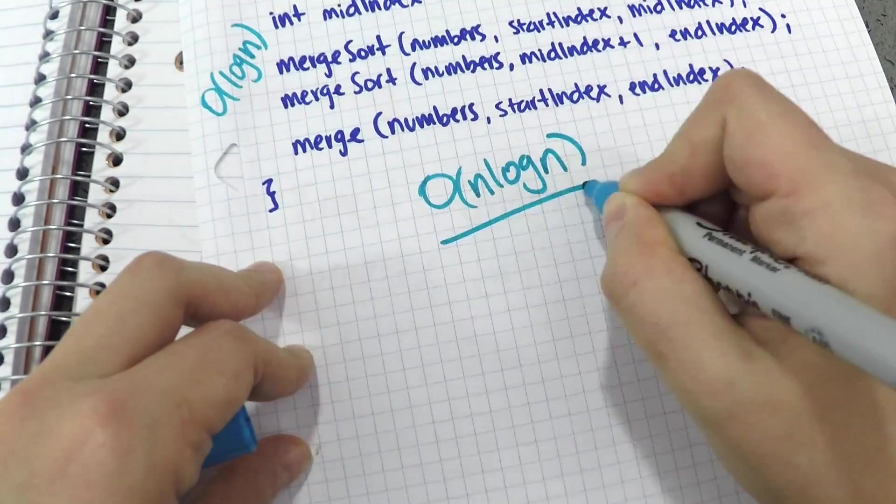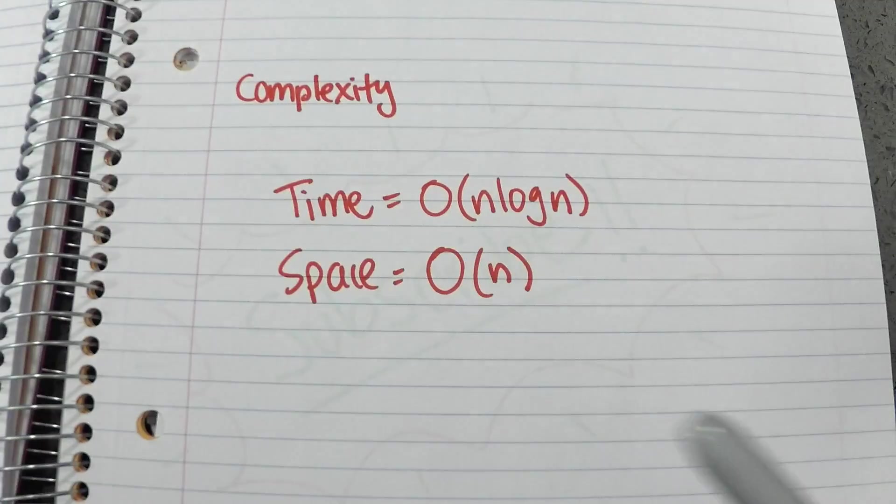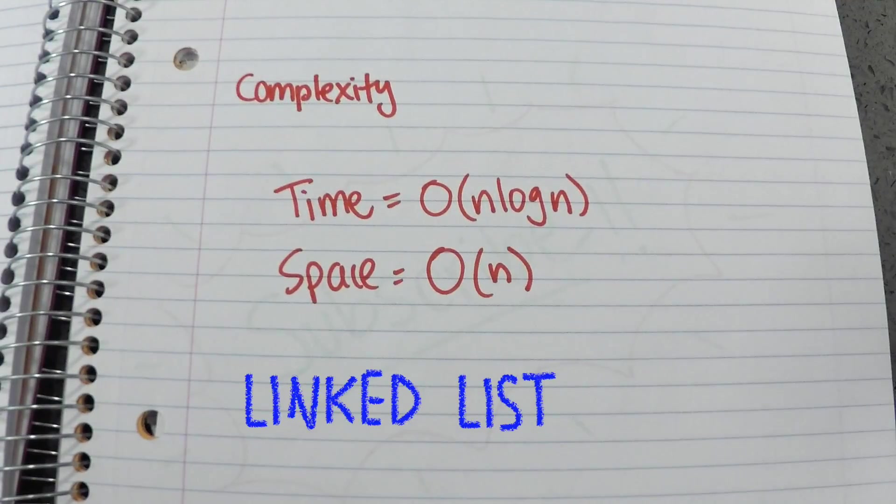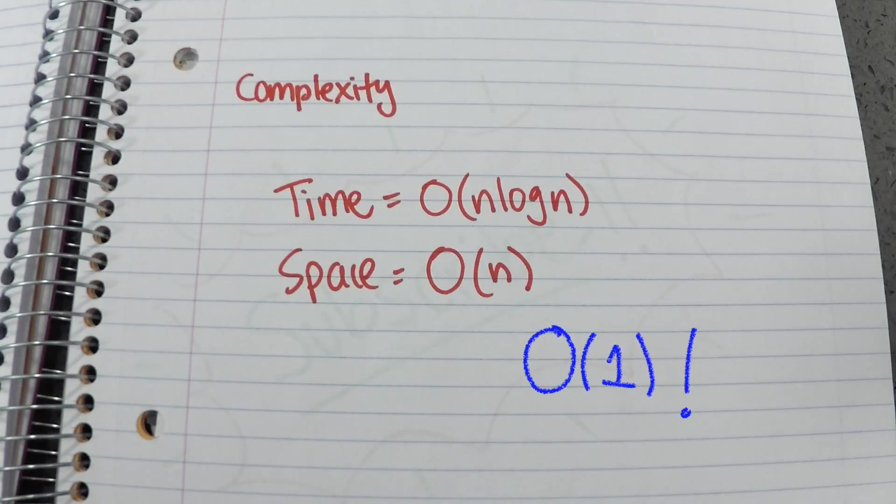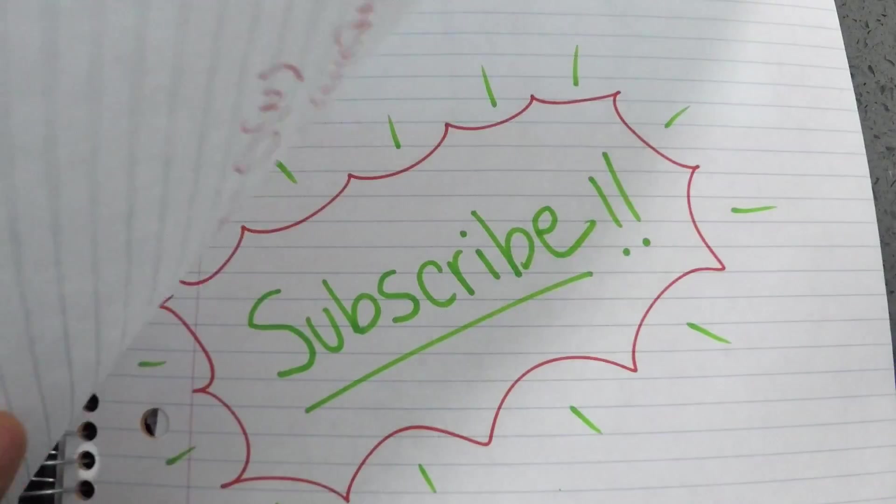If I were to have a linked list, I would not need to allocate extra space in a temporary array since I can move the pointers. Merge sort can have an O 1 space complexity when using linked list.